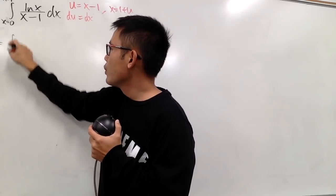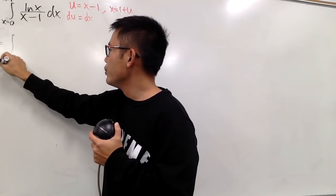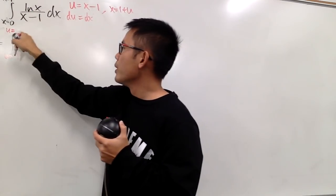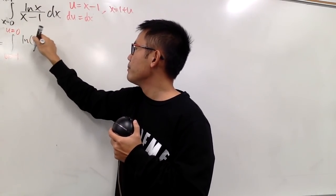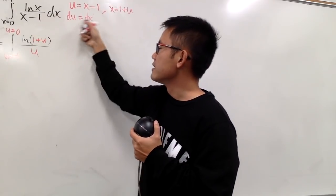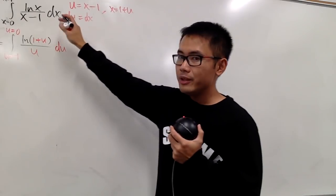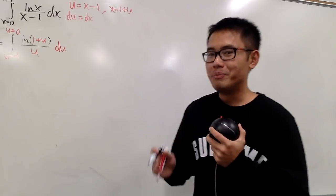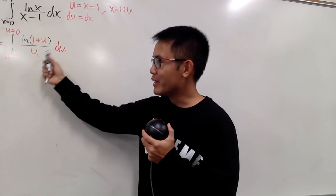When x equals 0, plugging in gives 0-1 = -1, so u goes from -1. When x equals 1, it's 1-1 = 0, so u goes to 0. With x = 1+u, we have ln(1+u) over u, and dx is the same as du. However, did we really make this integral any easier? The truth is no, because we don't have an antiderivative for this function in terms of elementary functions. So we cannot just integrate this with our usual technique.